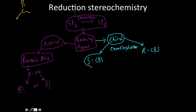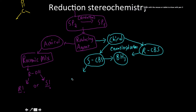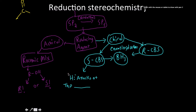In both of these circumstances, the reactive species is BH3. It doesn't go into too much detail on the mechanism behind how this reaction works, but in SCBS, the hydride is going to be attacking at the front. That hydride comes from BH3 — just know that the hydride attacks at the front.